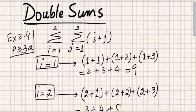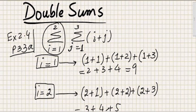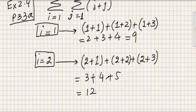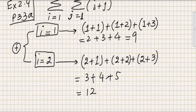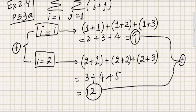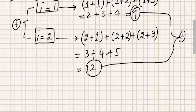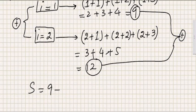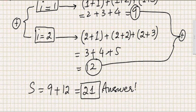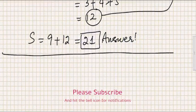Because there is a summation sign for i, all the iterations across i are added together. So we add 9 and 12. The final value of s is 9 plus 12, which equals 21. That's our answer.